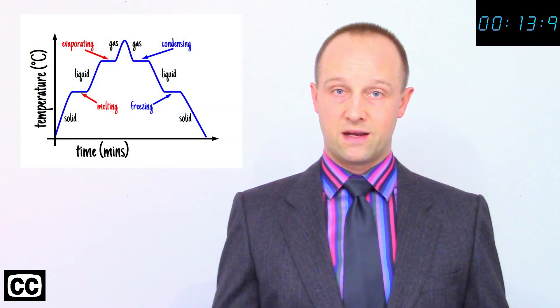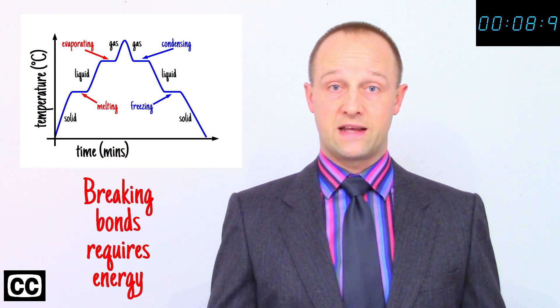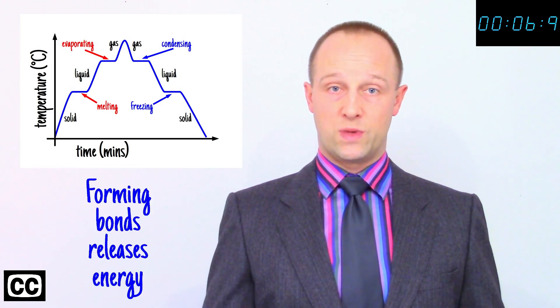If we plot temperature against time on a graph we get zero gradient sections for the state changes because breaking bonds as we heat takes energy and reforming bonds as we cool releases energy.